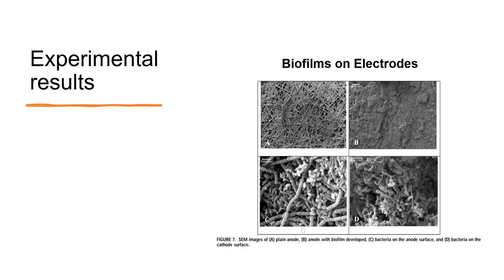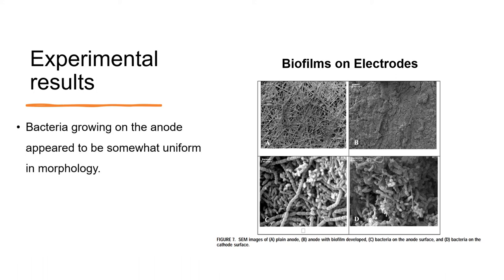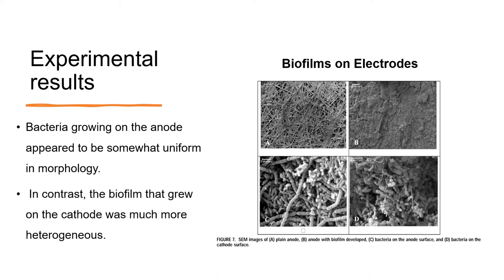Next, biofilms on electrodes. Biofilms formed on both electrodes. Bacteria growing on the anode appeared to be somewhat uniform in morphology, and many bacteria grew as chains. In contrast, the biofilm that grew on the cathode was much more heterogeneous.